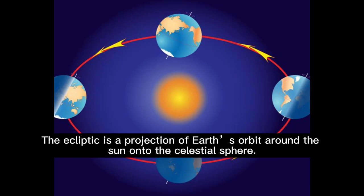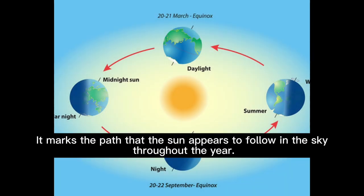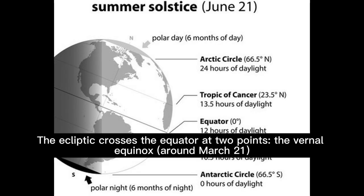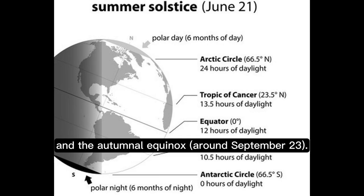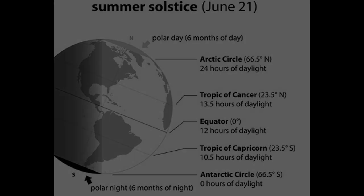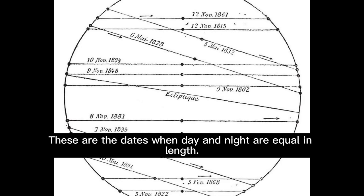The ecliptic is a projection of earth's orbit around the sun onto the celestial sphere. It marks the path that the sun appears to follow in the sky throughout the year. The ecliptic crosses the equator at two points: the vernal equinox around March 21, and the autumnal equinox around September 23. These are the dates when day and night are equal in length.